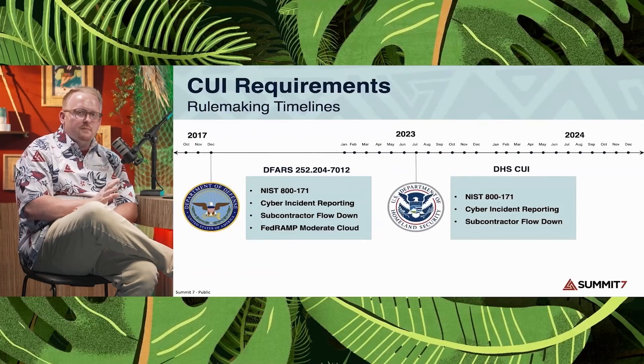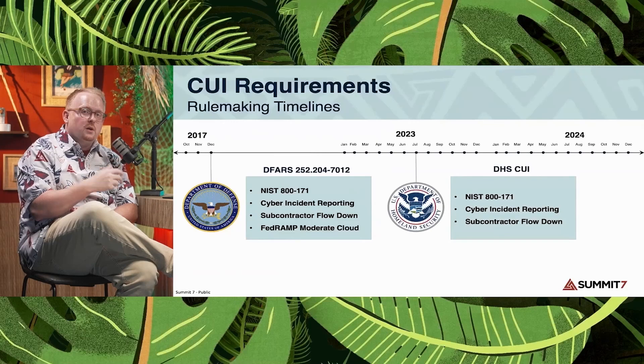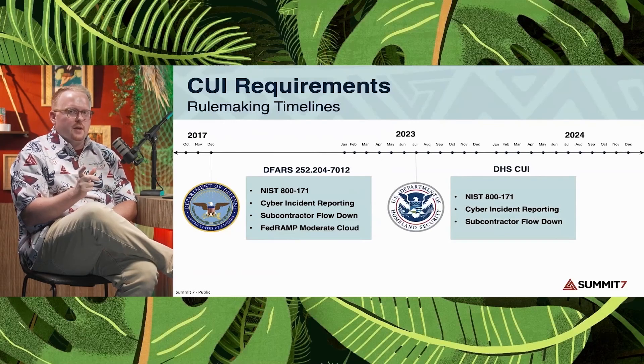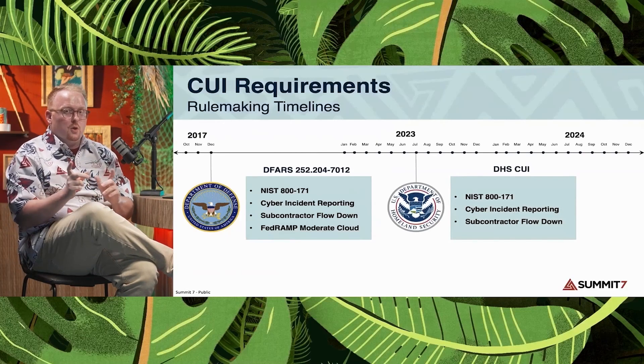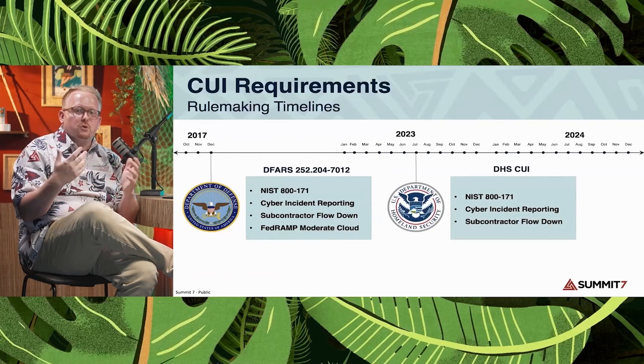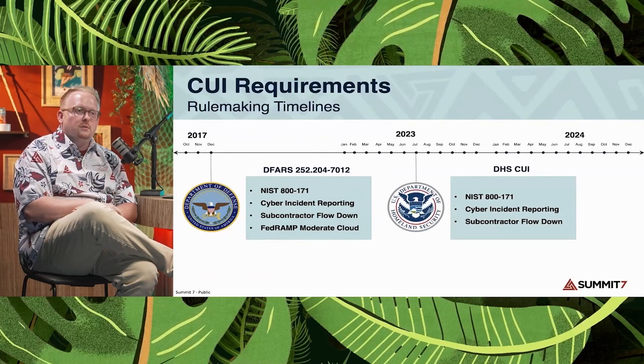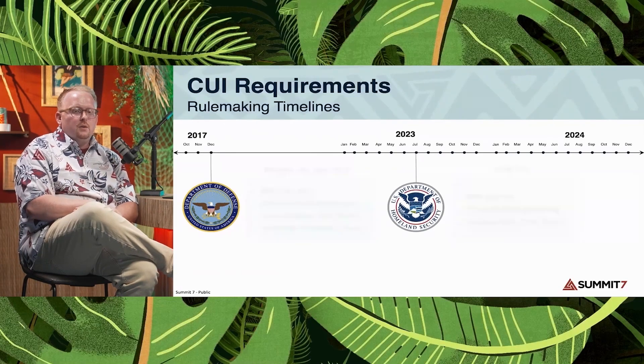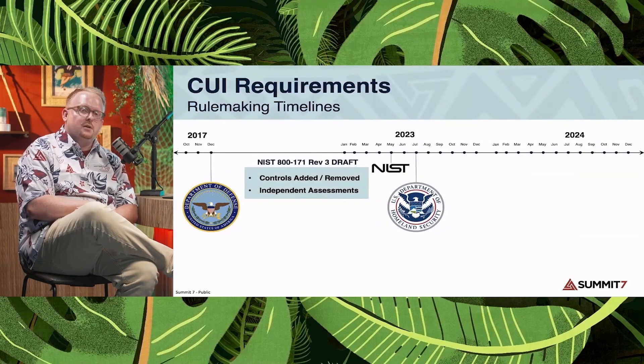Recently we've seen DHS come out with a CUI rule. DHS follows some of the same footprints — NIST 800-171 and cyber incident reporting — but interestingly, while DoD has a 72-hour window, DHS could potentially go down to just a few hours depending on the type of information involved, such as sensitive PII (SPII) or PHI. Subcontractor flow-down requirements are similar. One thing not seen in the DHS rule is the FedRAMP requirement, though the cyber incident reporting requirement could implicate Microsoft Government Cloud, which responds to a higher level of cyber incidents than the commercial cloud.